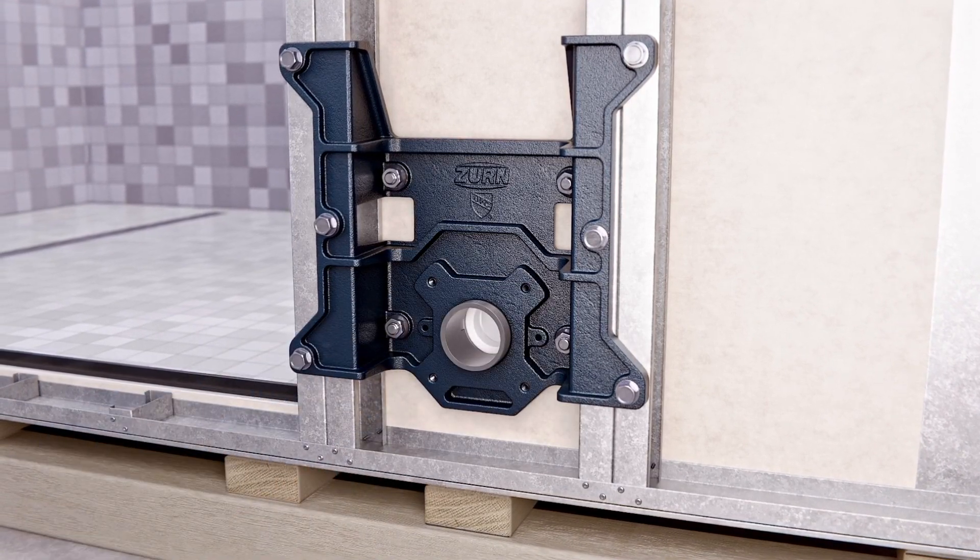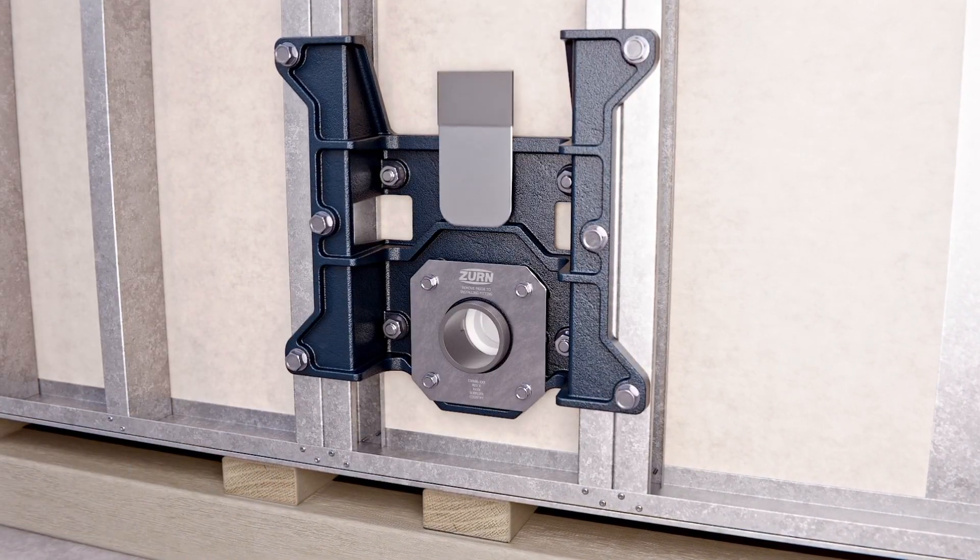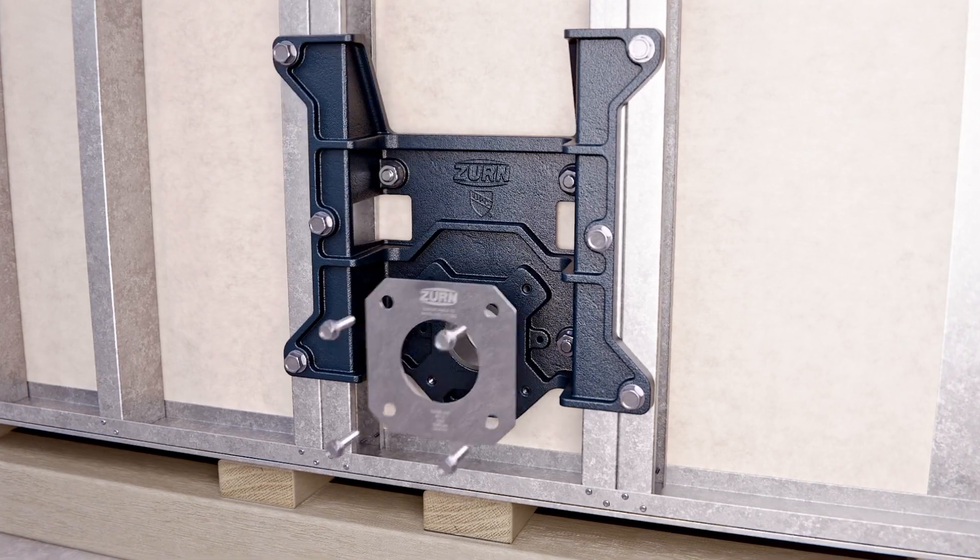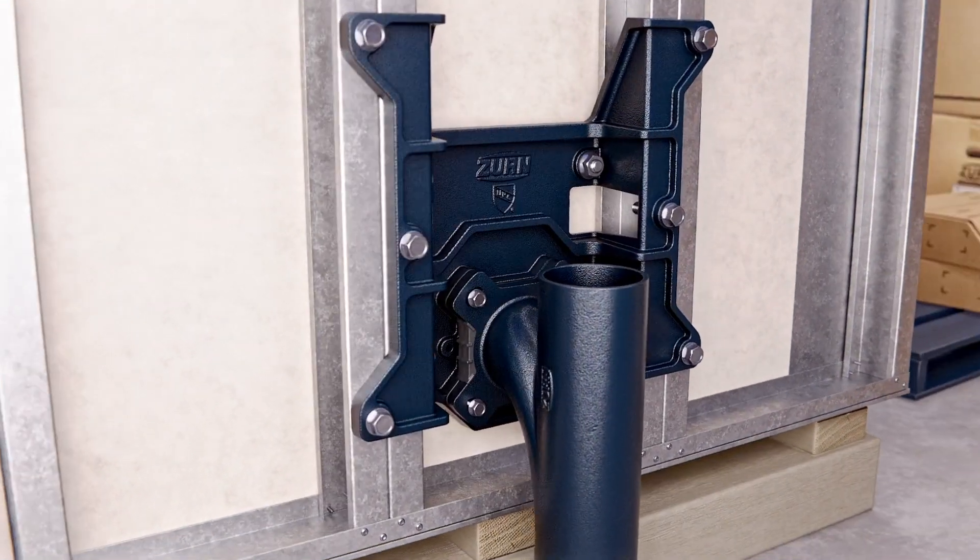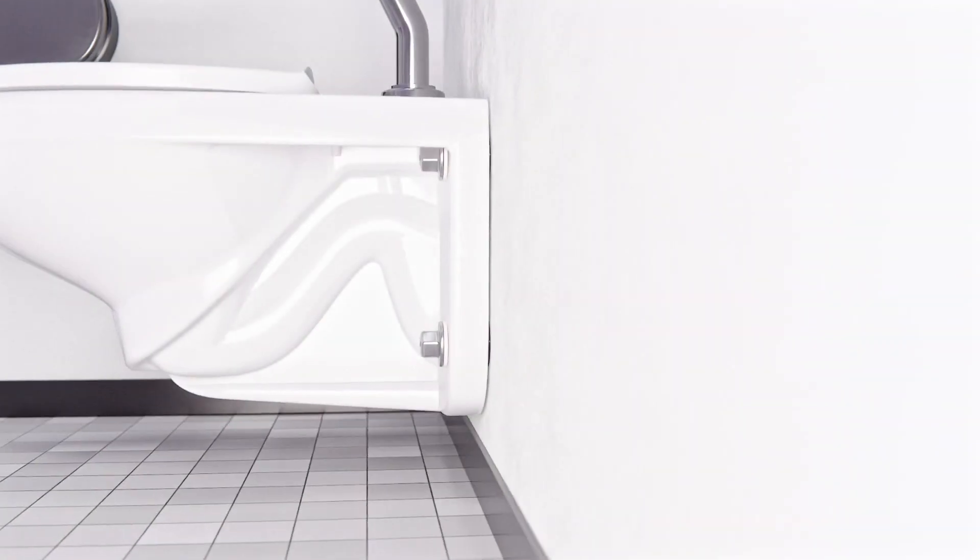The left, right and vertical full cast iron fittings offer the narrowest chase in the Zern portfolio. While the PVC and cast iron fitting adapters in 3-inch and 4-inch sizes allow fitting customization.